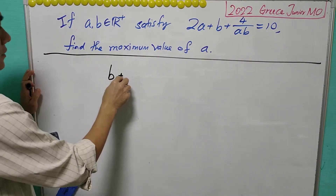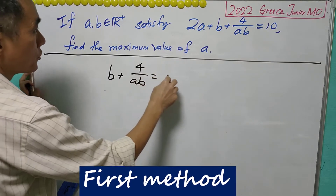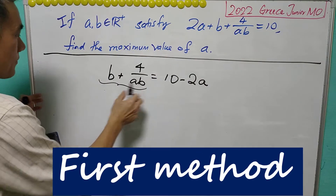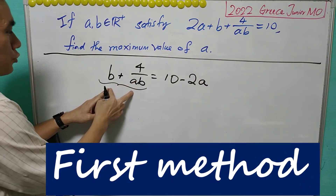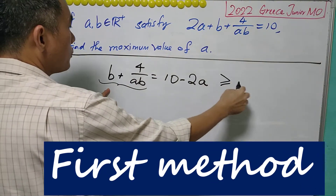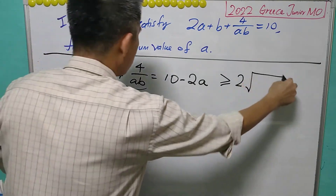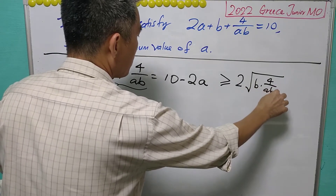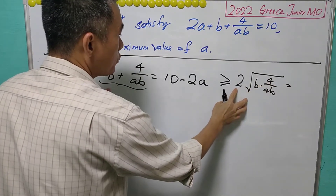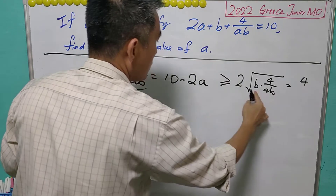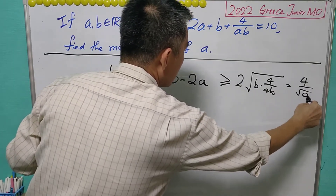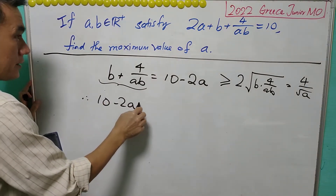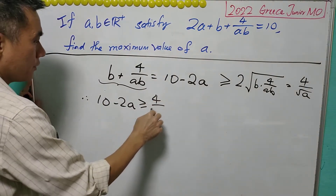From here, B plus 4 over AB equals 10 minus 2A. Now if we look at this, this is the sum of two terms, and it will be greater than or equal to 2 times the square root of the product. That is the square root of B times 4 over AB. The square root of 4 is 2, and the B's cancel off, giving us 4 over the square root of A. So we have 10 minus 2A is greater than or equal to 4 over the square root of A.